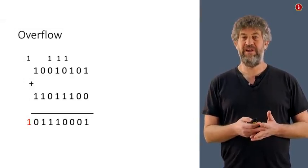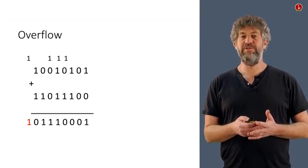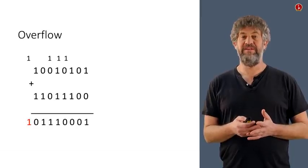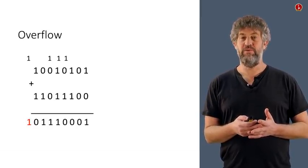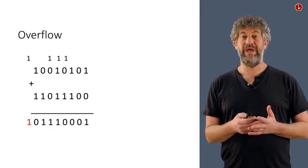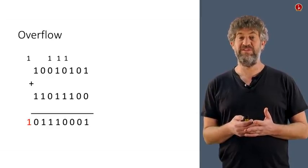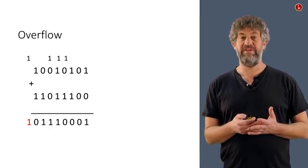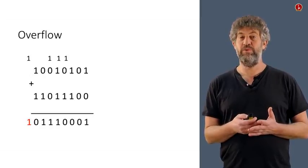Before we continue, there is one thing I want to take out of the way, and that is a question of overflow. Suppose that we were somehow unlucky and the two leftmost bits of the two numbers that we were adding were one. So what is the problem with that? The problem is that when we add them, we have a carry that needs to go to the left of the word size, and there is no place to put that carry bit because we've finished our word size. So what do we do?